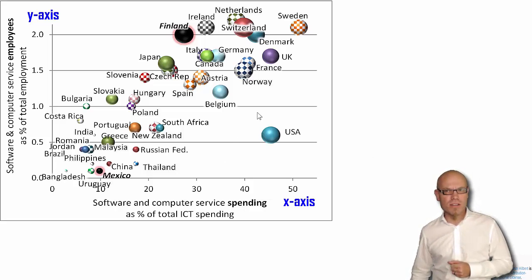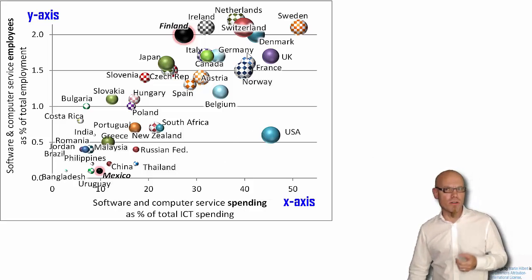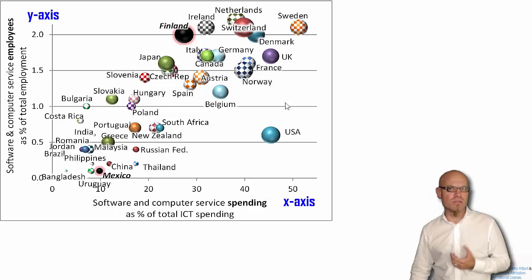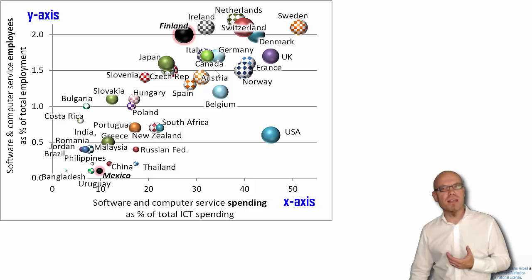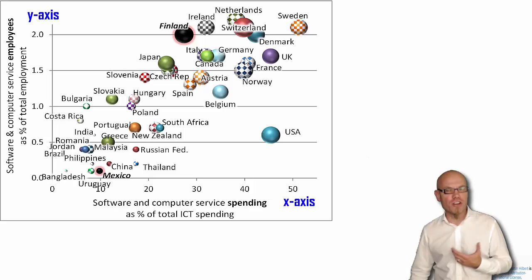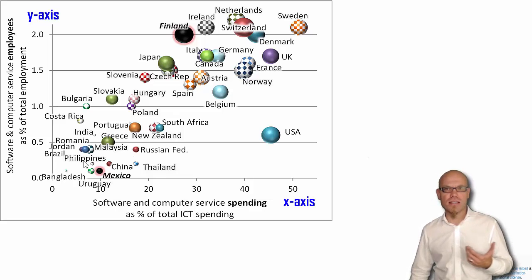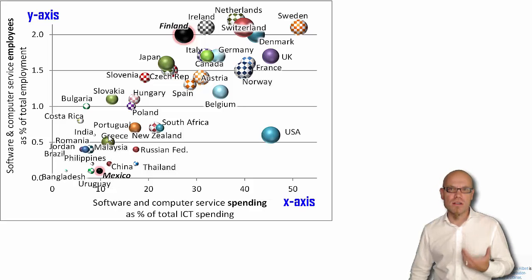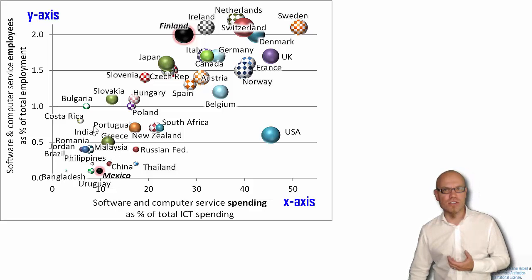One thing that becomes clear is that more developed countries like the USA, UK, Switzerland, and Finland spend a larger percentage of their ICT budget on software and computer services than developing countries like the Philippines, Mexico, and Malaysia.